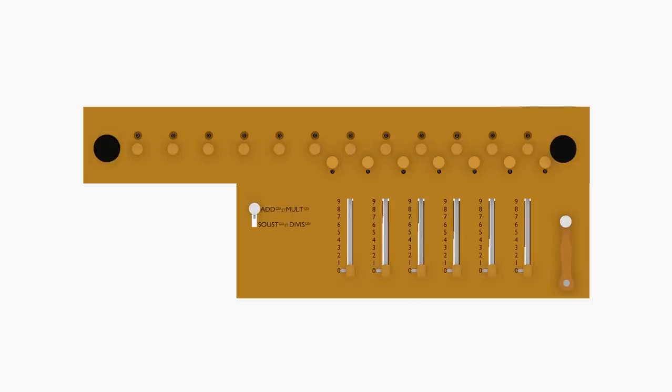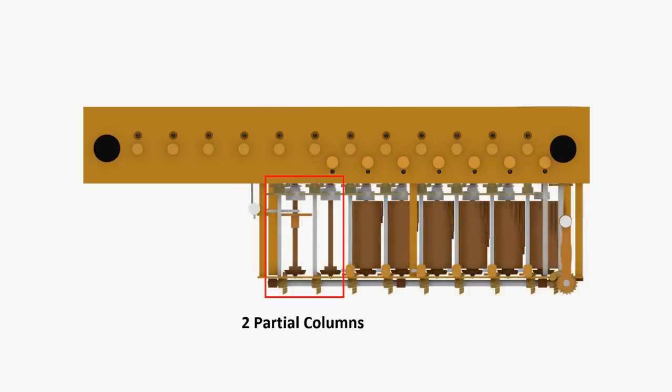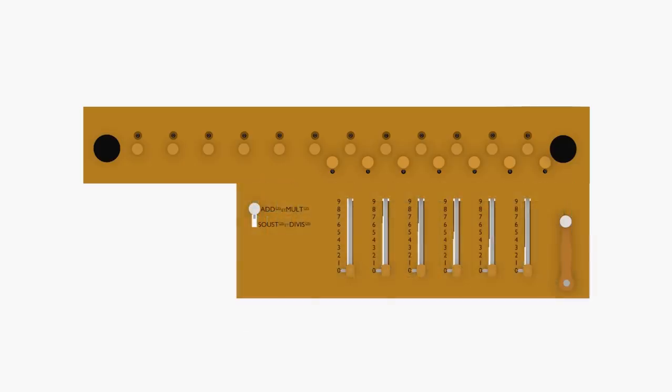This particular model of Arithmometer has 6 input columns and a 12 digit accumulator. The calculating unit is supplemented by 2 partial columns that only perform carry operations, allowing a wider operating range while reducing the cost of the calculator.